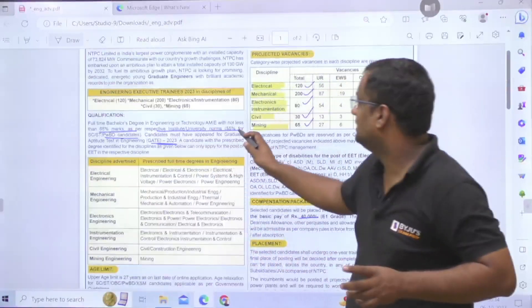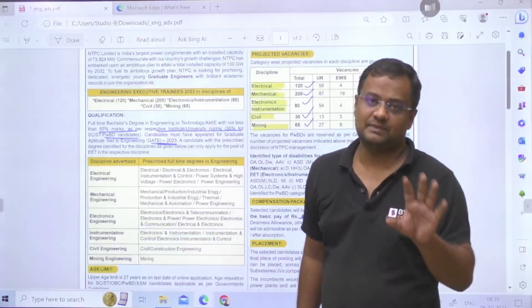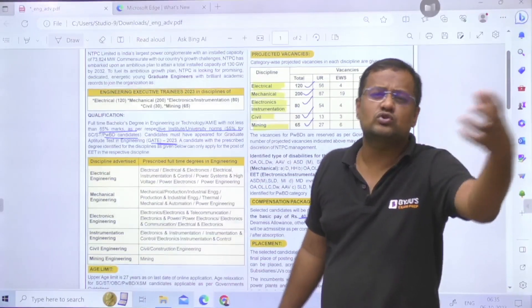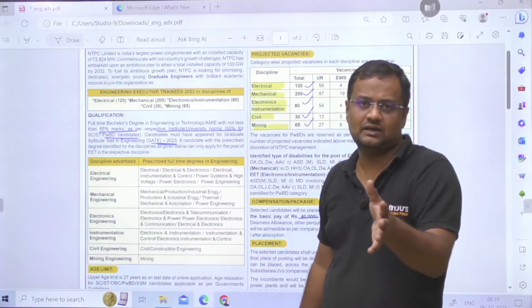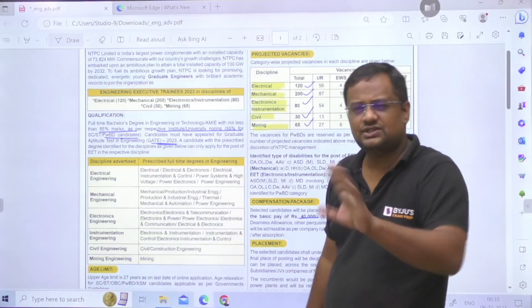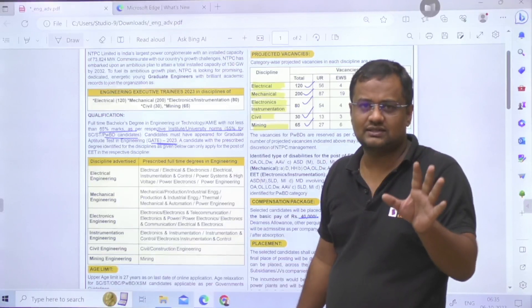Next condition is that your BTech should be with a percentage of 65% at least, and that is the case for most of the PSUs except Power Grid. 65% for most of the PSUs, that is the thing.